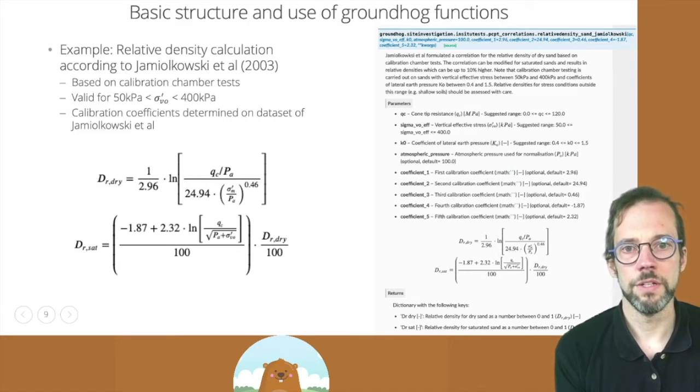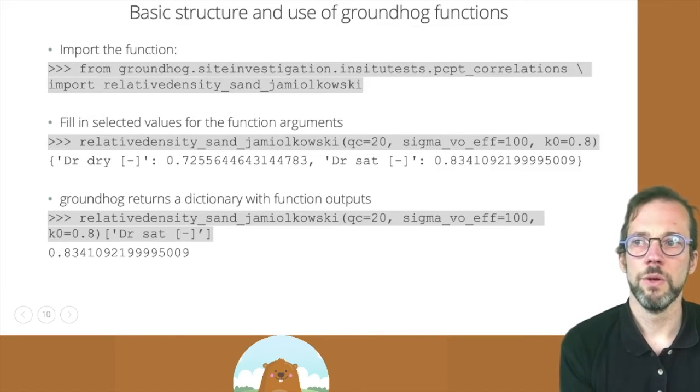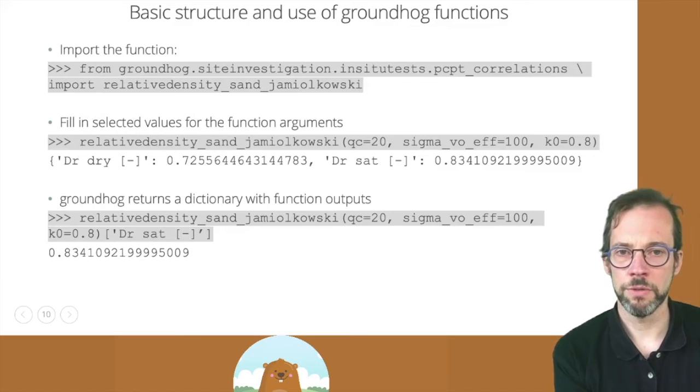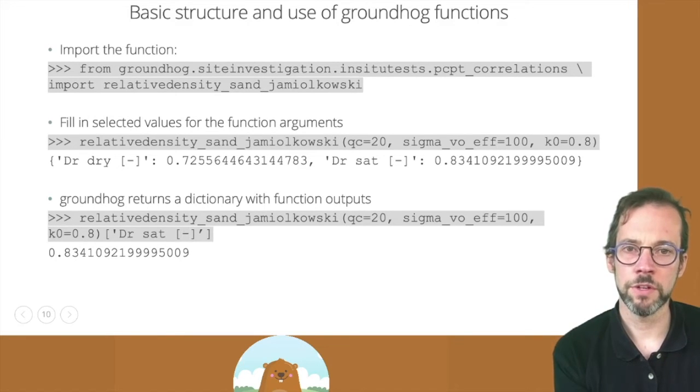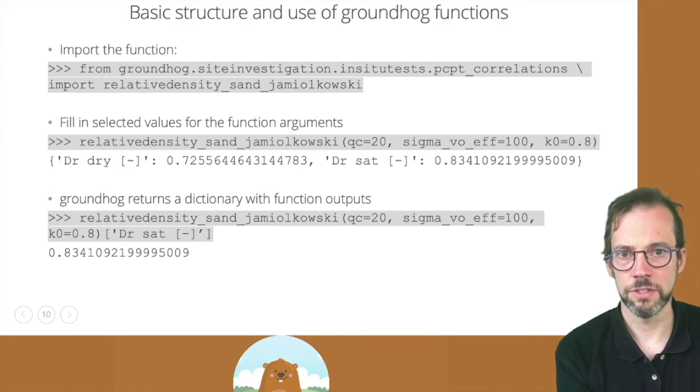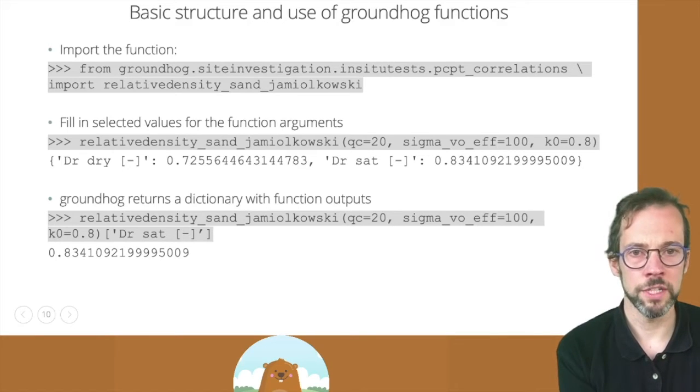If we want to use this function, we can import it from Groundhog by typing in this import statement. So the function is part of the PCPT correlations module in the InstituteTests sub-package. So we'll import it by typing in that statement and executing it. And then we have the function available, so we can call it.